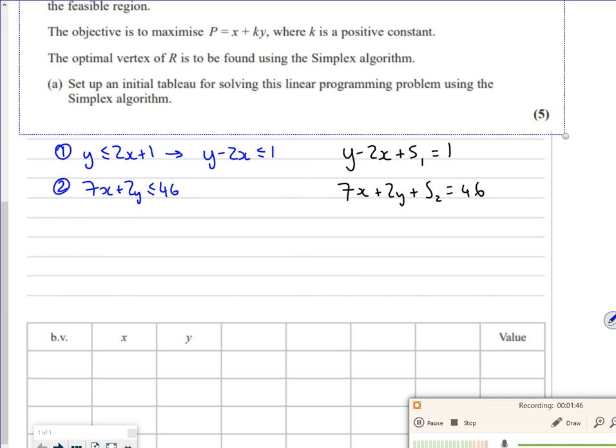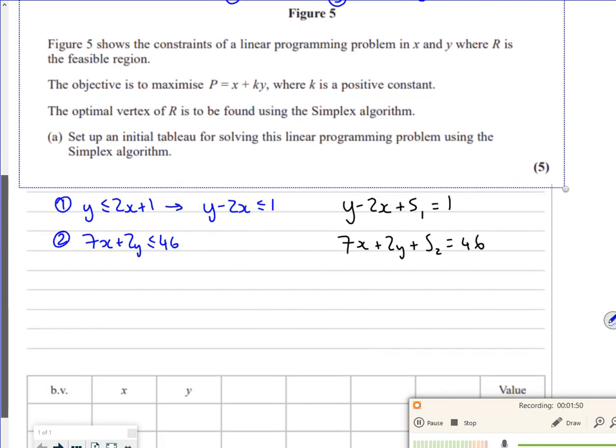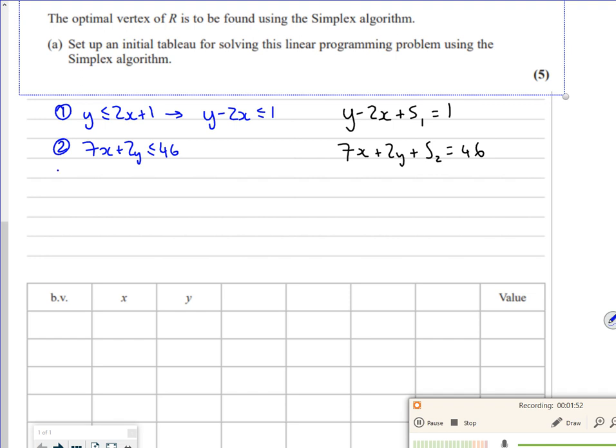The third one I had is x plus y is less than or equal to 8. And remember, the reason I'm doing Simplex on these is because it's less than or equal to all the time. If it's greater than or equal to, I need to do two-stage or big M. Now x plus y plus s3 is equal to 8.